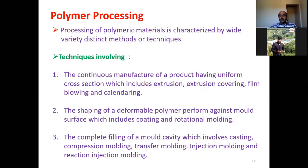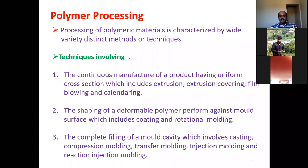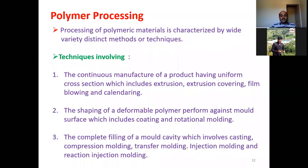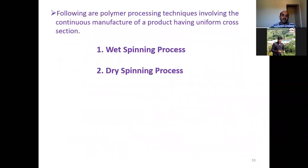The processing of polymers means how you can manufacture synthetic or artificial polymers. The techniques based on continuous manufacturing have a uniform cross section — for example, extrusion or extrusion covering. The second technique involves shaping a deformable polymer against a mold surface, including rotational molding. The third involves complete filling of a mold cavity, such as casting, compression molding, transfer molding, injection molding, and reaction injection molding.